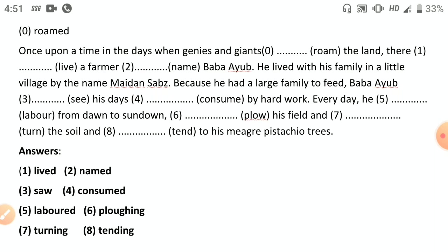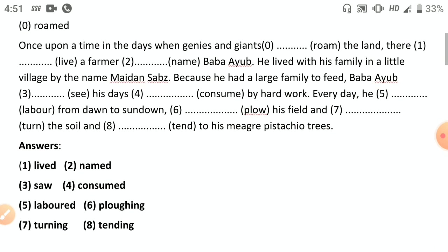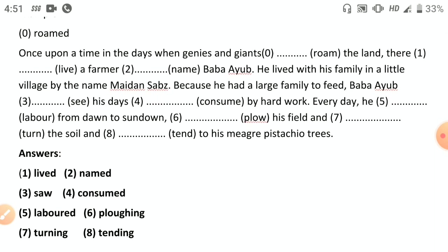Every day he labored from dawn to sundown, plowing his field and turning the soil and tending to his meager pistachio trees. What work he used to do: he used to plow his field, turn his soil, and tend his meager pistachio trees.